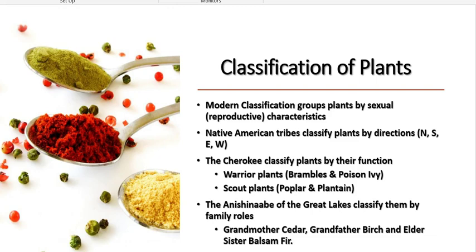The Anishinaabe of the Great Lakes classified plants by family roles. Therefore, cedar becomes grandmother cedar, birch becomes grandfather birch, and elder sister balsam fir.